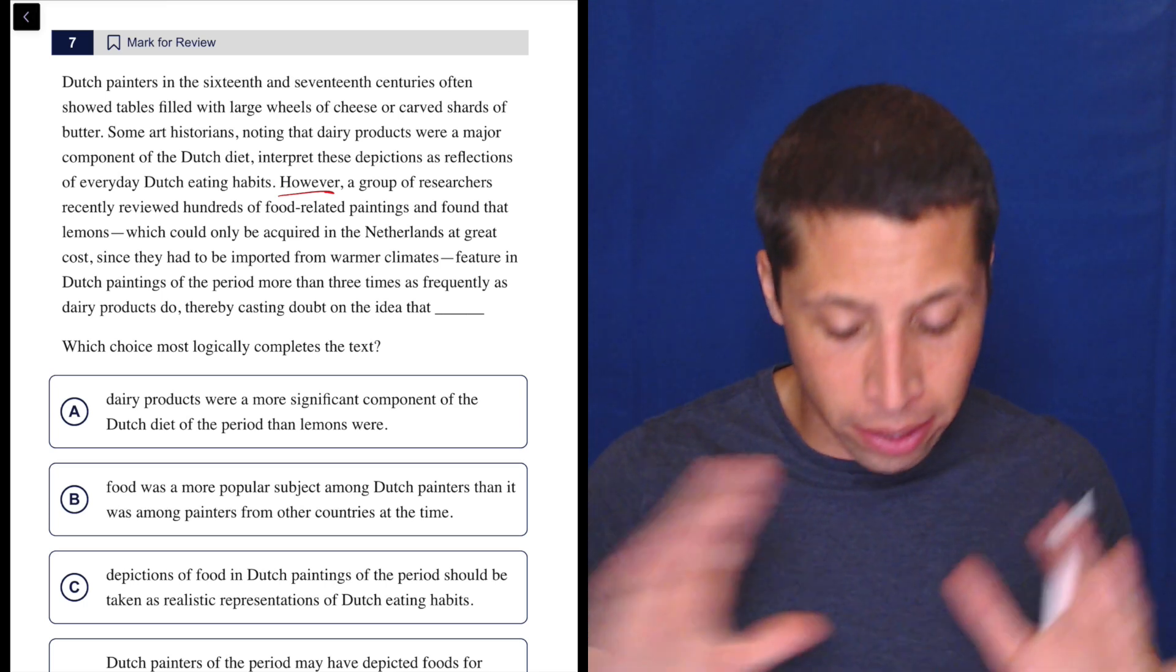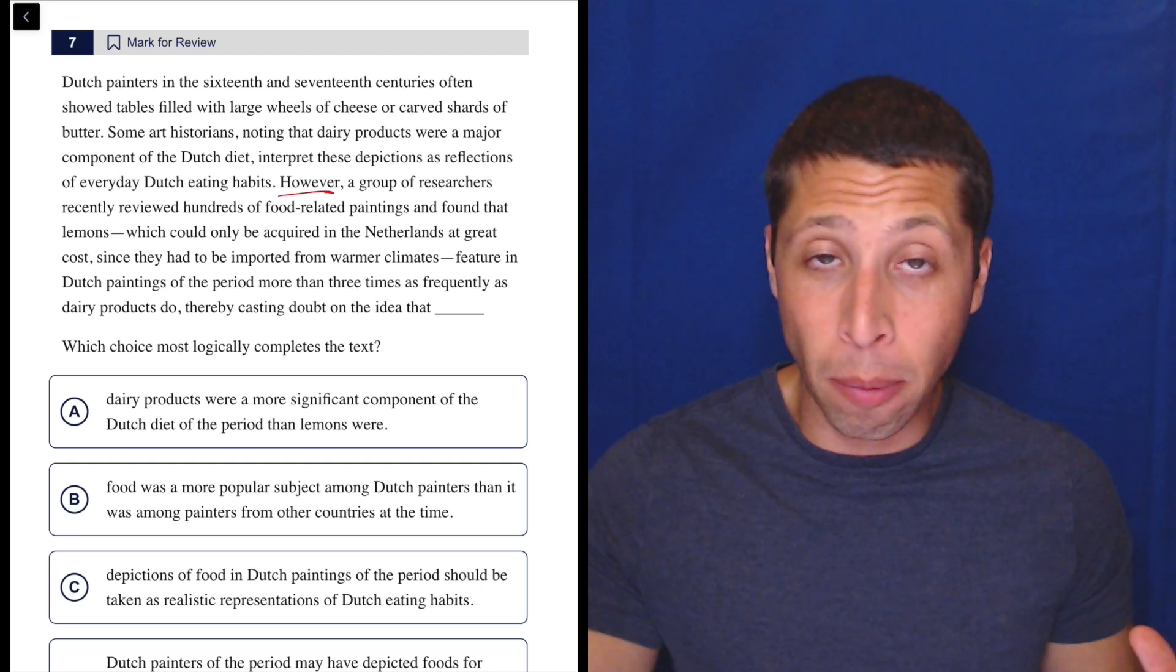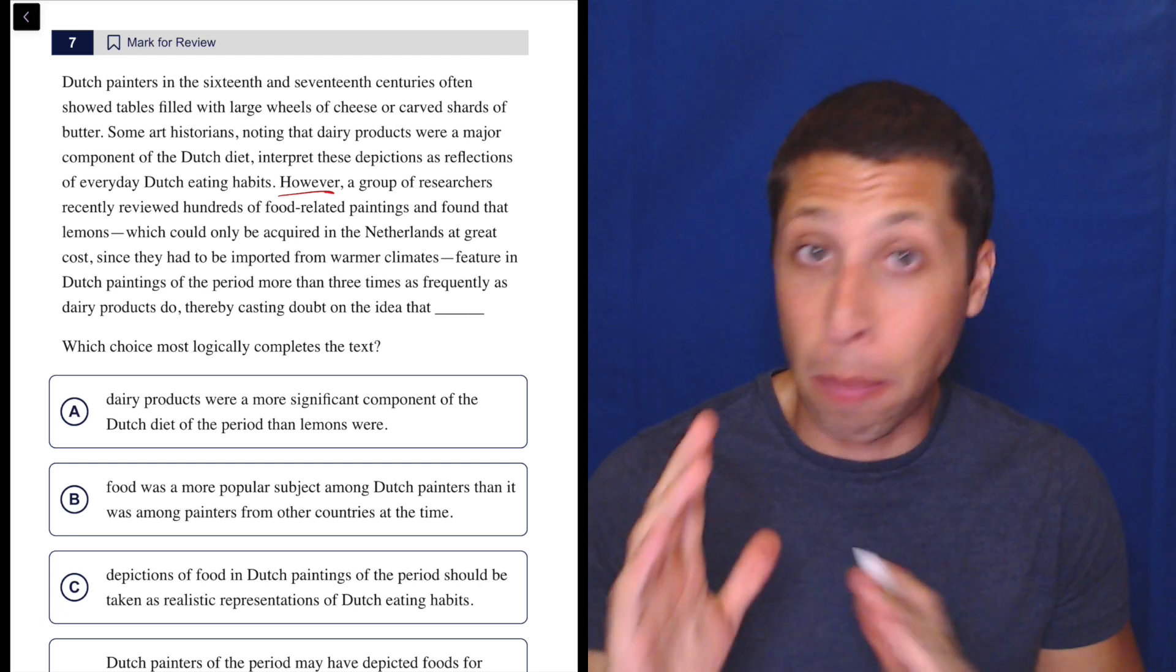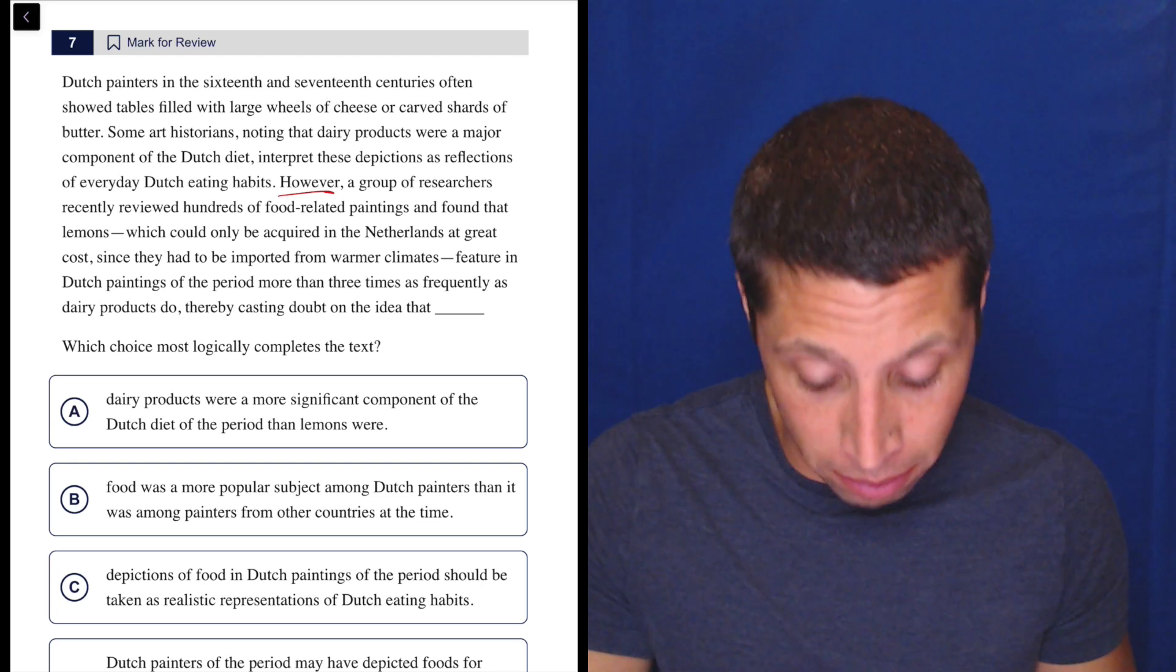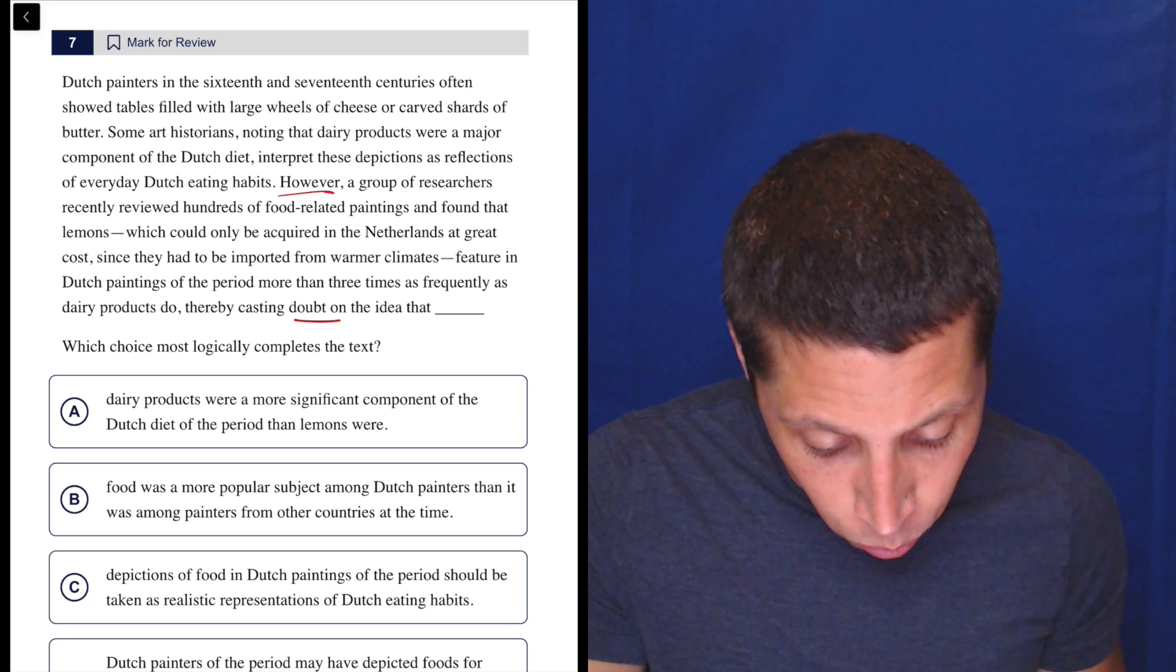Why? What were they saying about the dairy? I can go back really quickly because I know what I'm looking for. I'm not rereading because I'm confused. I'm rereading because I've got a plan. So that's a good reason to reread. So what is the doubt? What were they saying before?